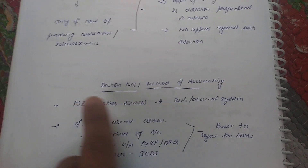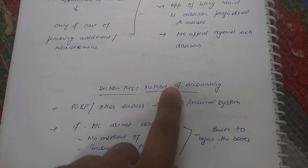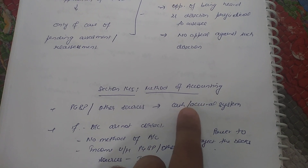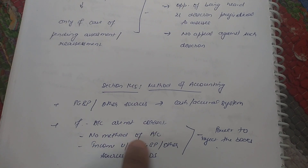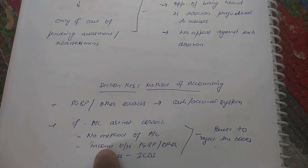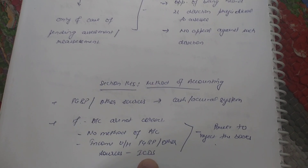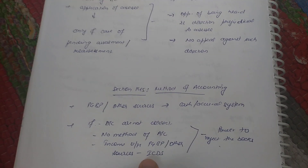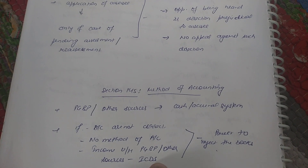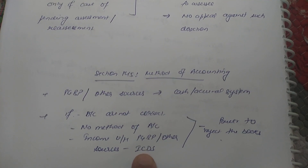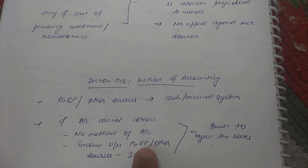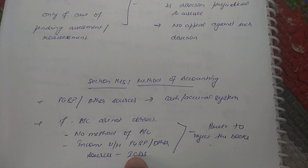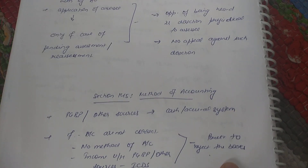Section 145 talks about the method of accounting. For income under PGBP or other sources, you can use cash or accrual system. However, if the accounts of the assessee are not correct, no method of accounting is followed, or income is not computed as per ICDS — Income Computation and Disclosure Standards — then the AO has the power to reject the books of accounts.